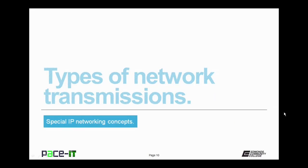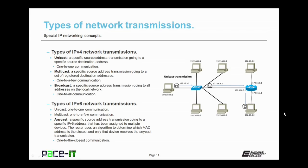Let's discuss types of IPv4 network transmissions. First up is unicast — a specific source address transmission going to a specific destination address. It can be thought of as one-to-one communication; it's only two devices transferring data between each other. Then there's multicast transmission, where a specific source address transmission is going to a set of registered destination addresses. This is one-to-a-few communication. Routers often use multicast transmissions to track their routes and to make changes to their routing tables.